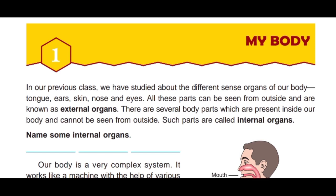In our previous class, we have studied about the different sense organs of our body: tongue, ears, skin, nose and eyes. Aapne apni pichli class mein alag-alag sense organs ke baare mein padha hai — tongue, ear, skin, nose and eyes. All these parts can be seen from outside and are known as external organs. Woh saare parts jisko hum baahar se dekh sakti hai, unko external organs kehte hai.